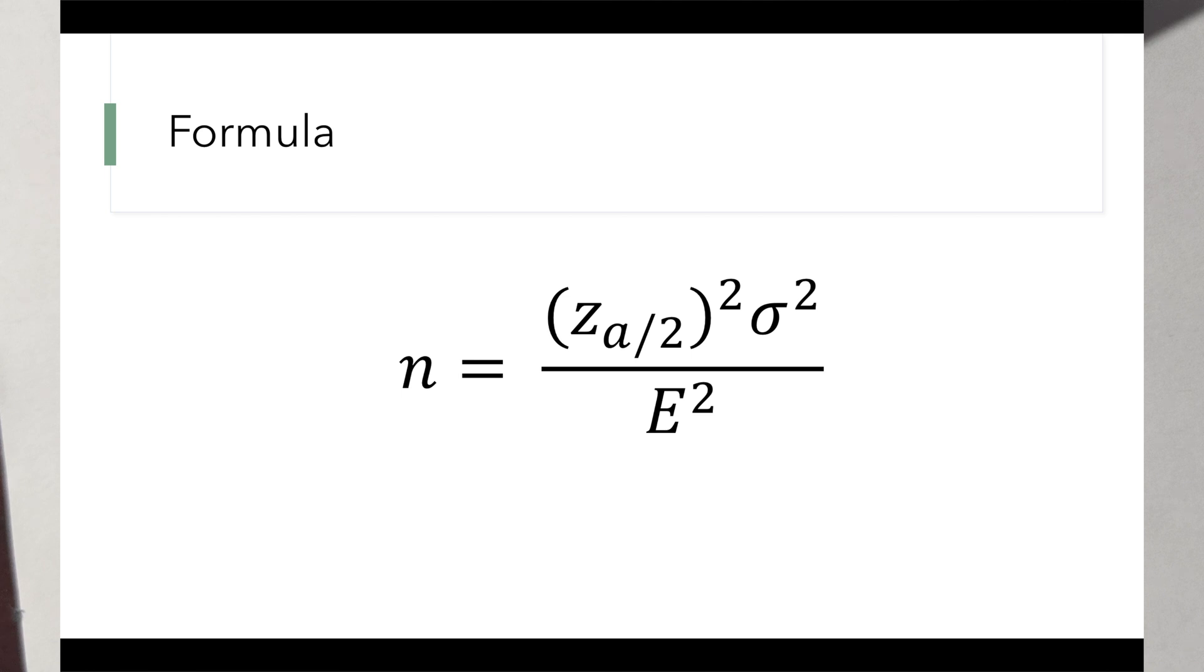So the formula here, n, your sample size, is equal to the critical z value that's associated with alpha over 2 squared times the standard deviation squared, which we know is just the variance, divided by the specified error squared, and that's denoted with the capital E here. So to make this a little bit more tangible, let's do some practice problems.